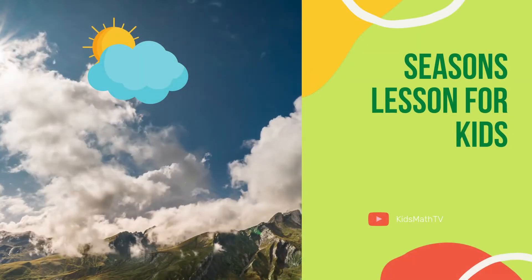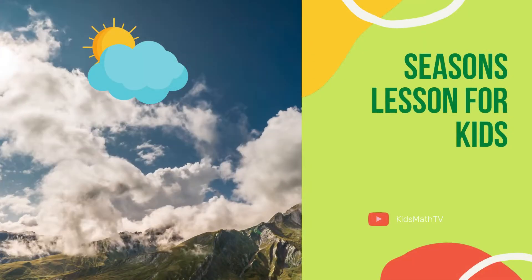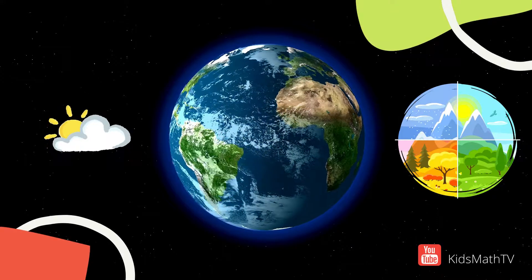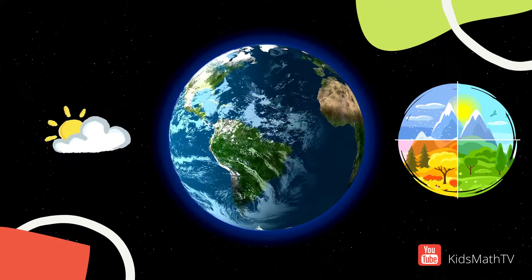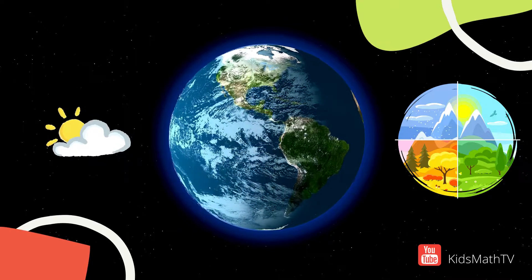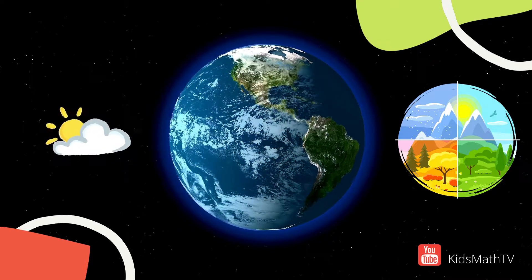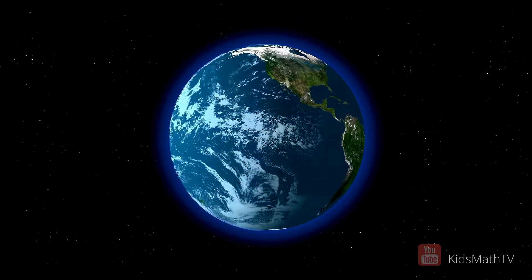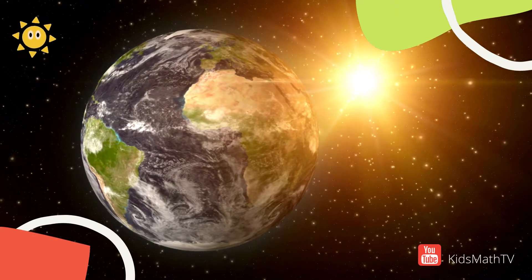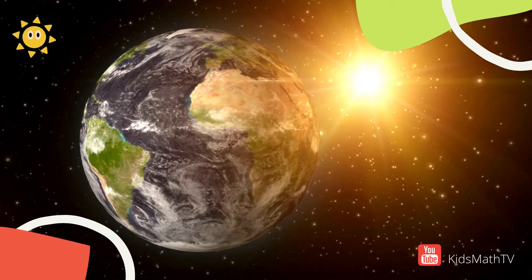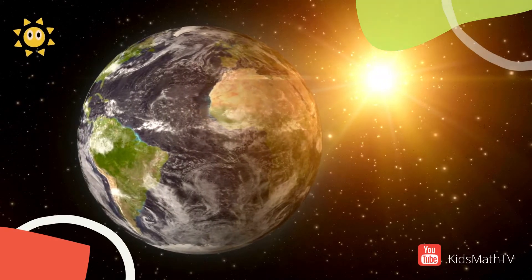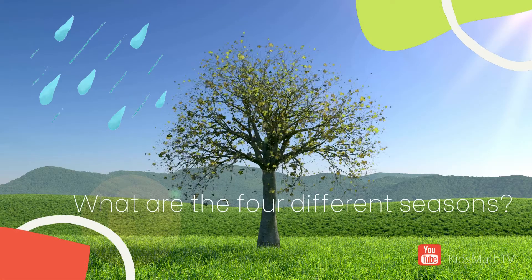The different seasons lesson for kids. The seasons are a product of Earth's tilted axis, which causes different parts of the world to directly face the sun at any point in the year and thus receive more sunlight. The planet's tilt also changes the length of the day. These factors combined change the weather patterns for an area, causing the seasons.